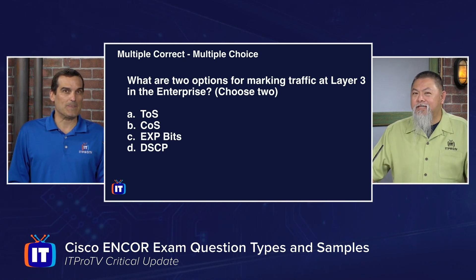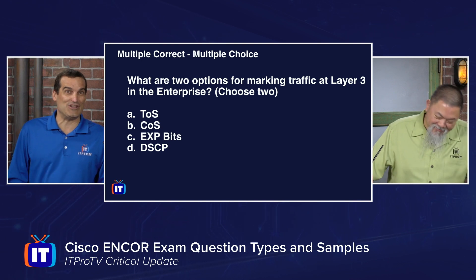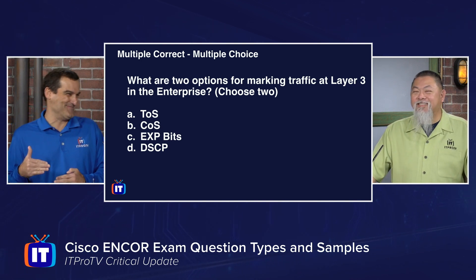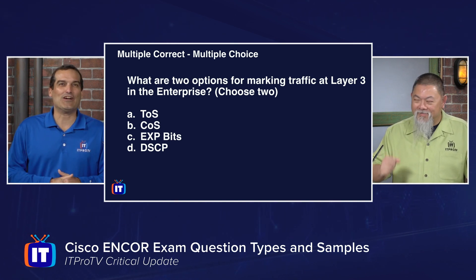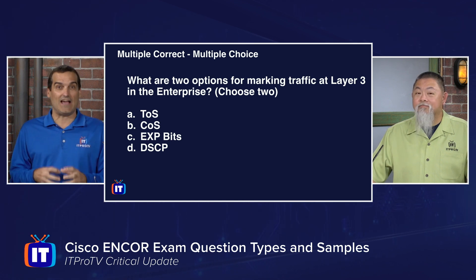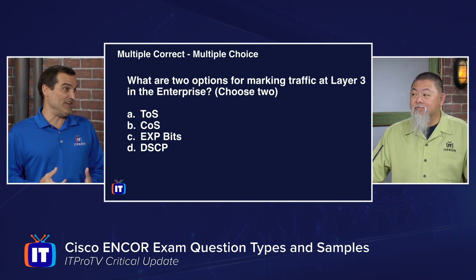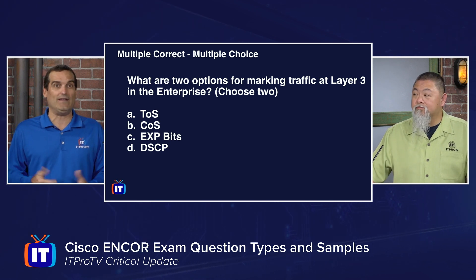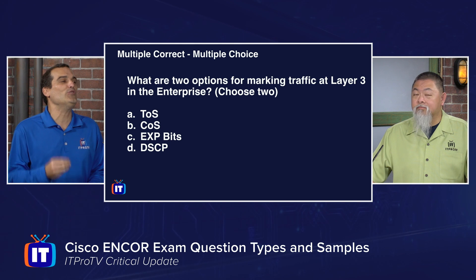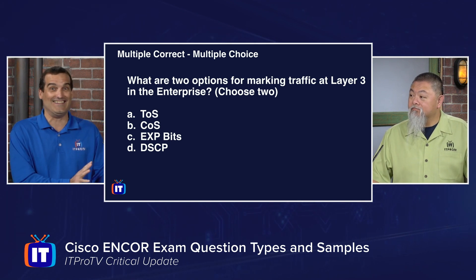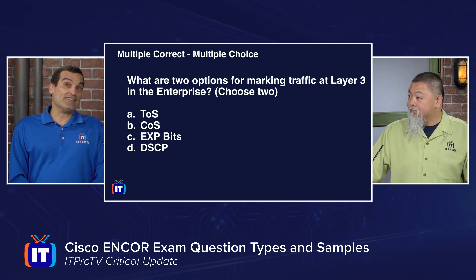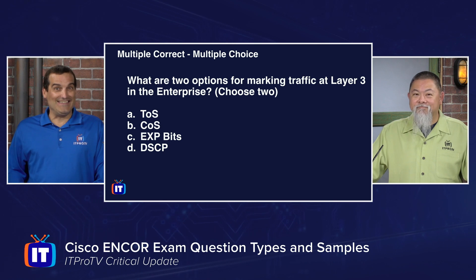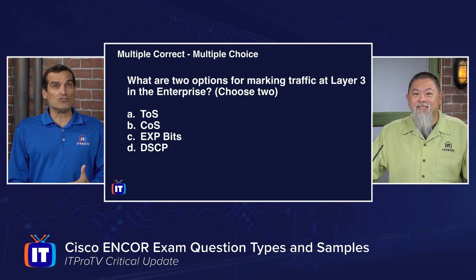Ronnie guessed C and D, which was very close. However, the experimental bits are used with MPLS — that's layer two and a half. So the correct answers are A and D: Type of Service and Differentiated Services Code Point, which are the pure layer three markings. Importantly, we don't get partial credit for answering only partially right, so you have to nail both — A and D.